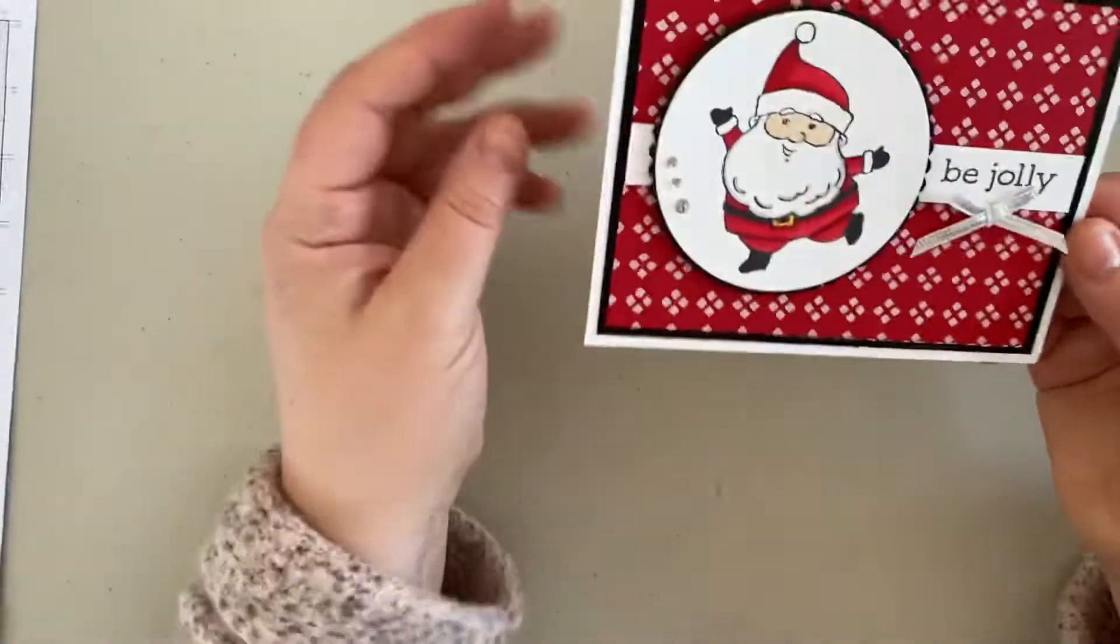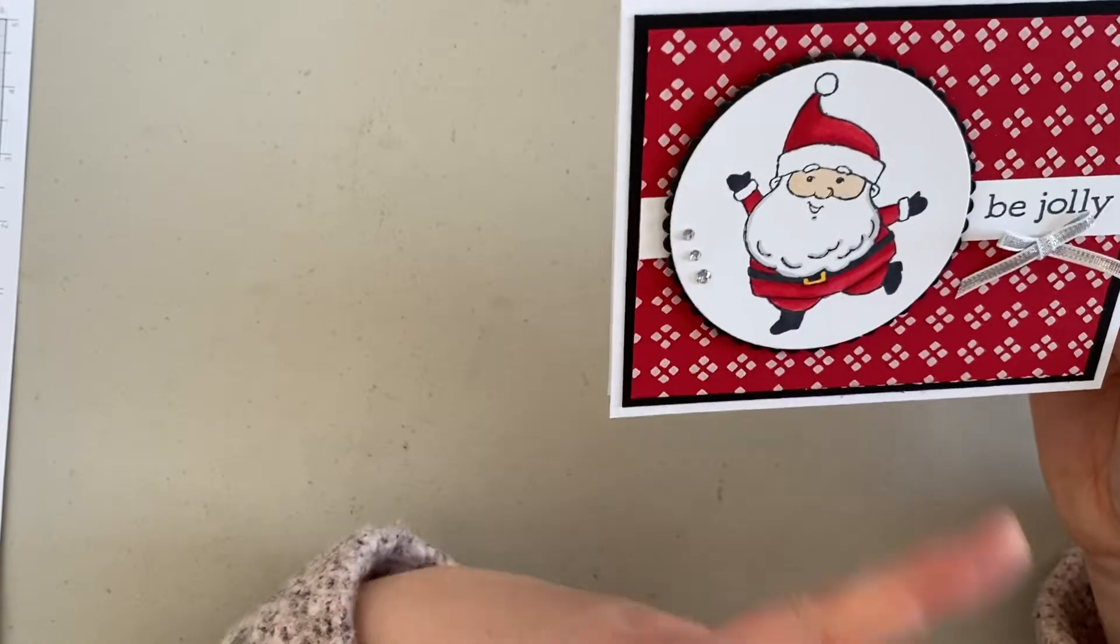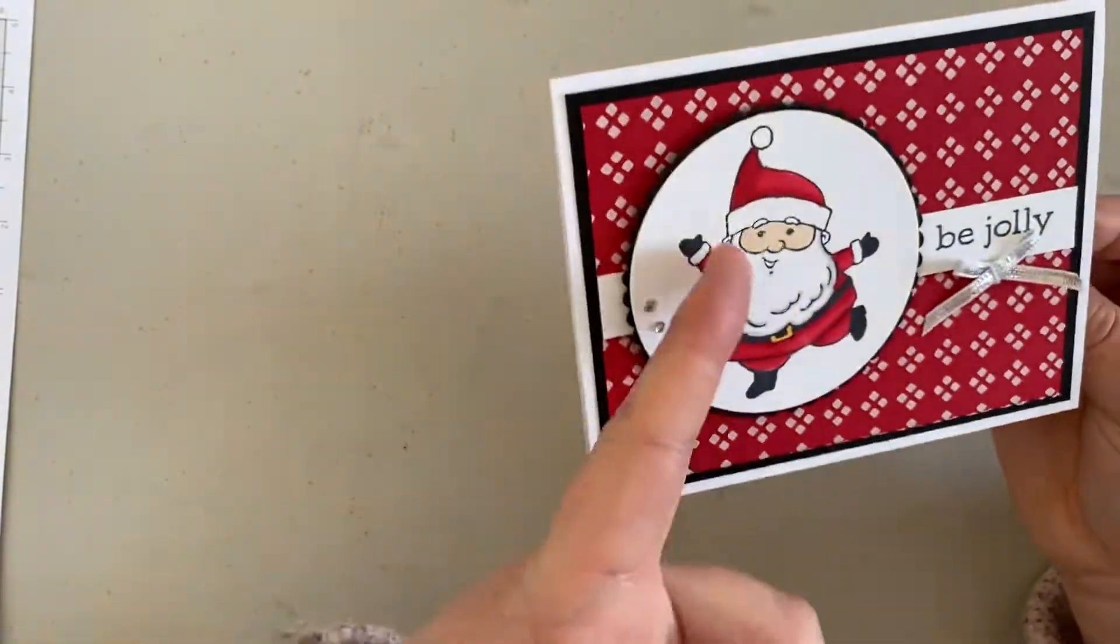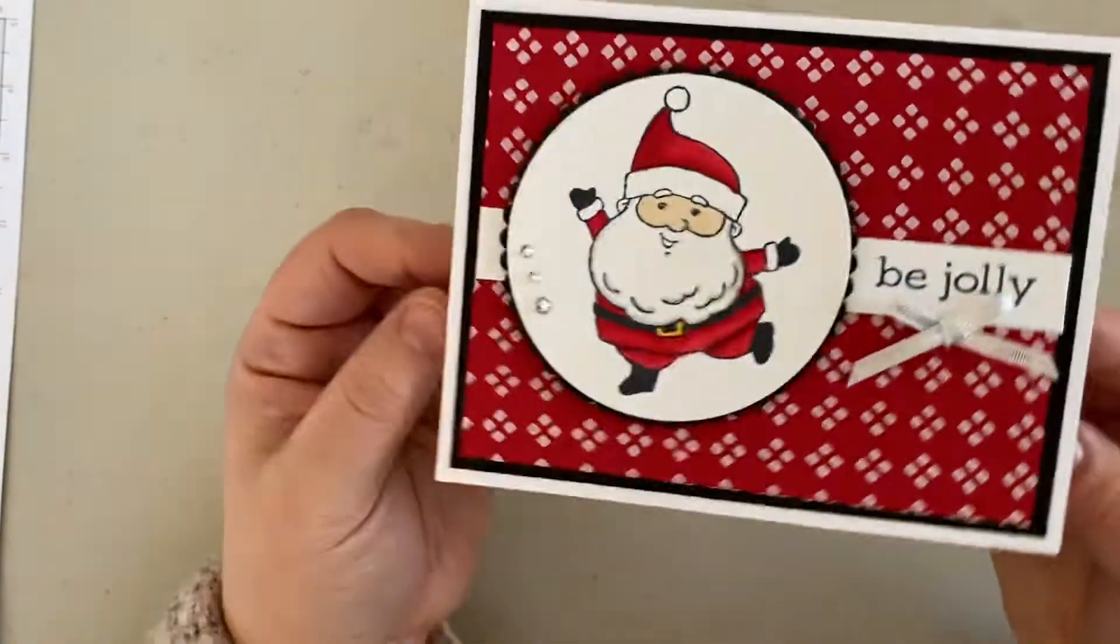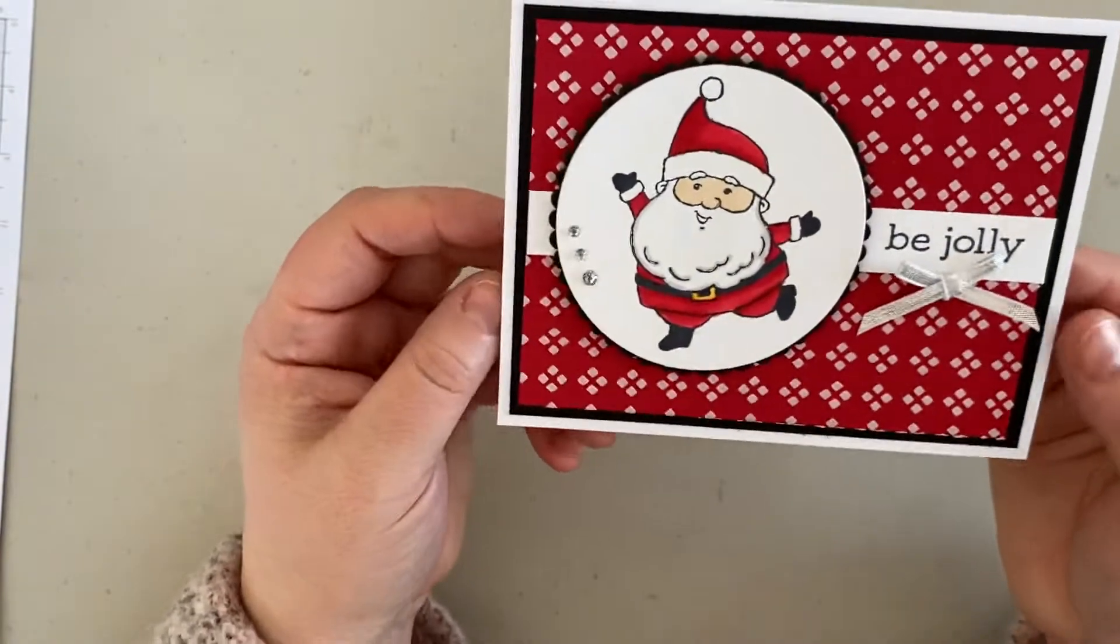So again, here's the card that I was making. I'm not going to go through all the steps of the card. I used the Be Jolly stamp set and I used Stamp and Blends on there, so easy peasy card to make.